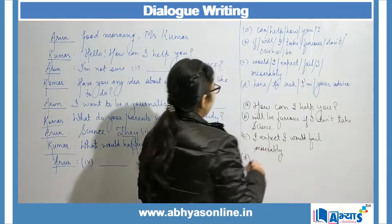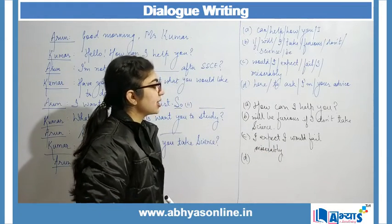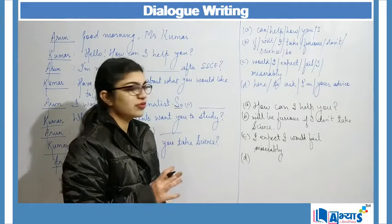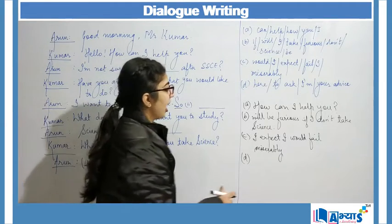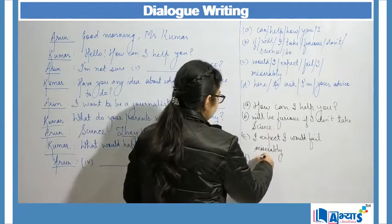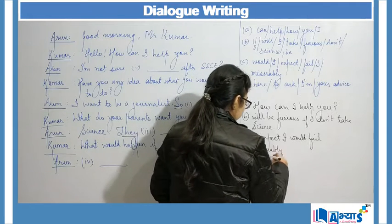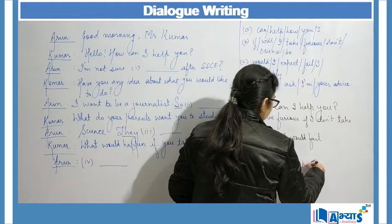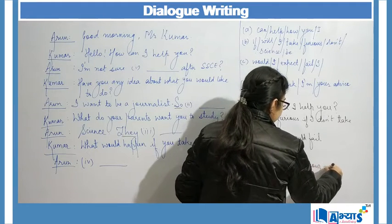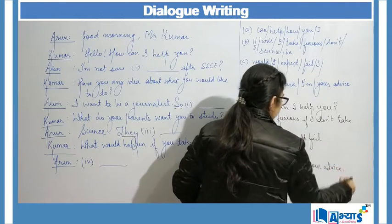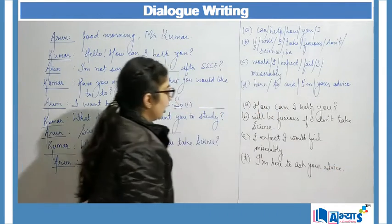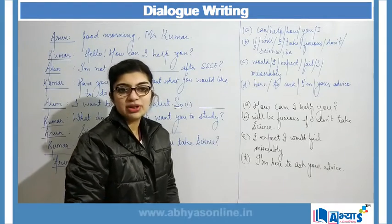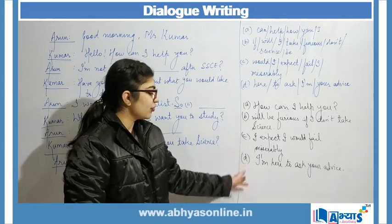Sentence D is 'here to ask i am your advice' — this is the most easy jumble. The correct sentence is: 'I am here to ask your advice.' Now having rearranged all four jumbled sentences, we need to determine which blank each sentence fits into.